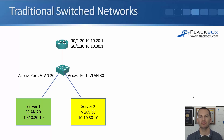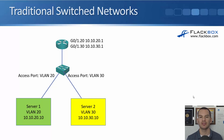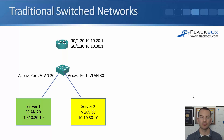This is a simple router-on-a-stick configuration. Subinterface gigabit ethernet 0/1.20 has IP address 10.10.20.1 — the default gateway for server 1. Subinterface gig 0/1.30 has IP address 10.10.30.1, the default gateway for server 2. Now those two servers are able to communicate. That's how it works on traditional switch networks.